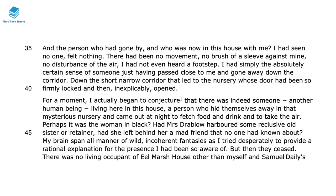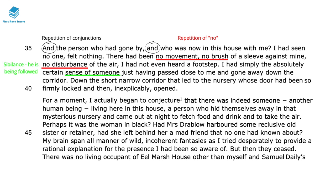In this part of the passage the protagonist is trying to rationalise why he feels like something — or someone — is there in Eel Marsh House with him, even though he knows there's nobody else. The repetition of the conjunction 'and' shows his fear, but also his attempt to be investigative and rational. He then thinks 'there's been no movement, no brush, no disturbance' — the repetition of 'no' shows his emphatic rational side trying to take over and reassure him that really there's nothing there. However, the sibilance in 'sense of someone' shows he really strongly believes he's being followed around the house, which creates something really scary.